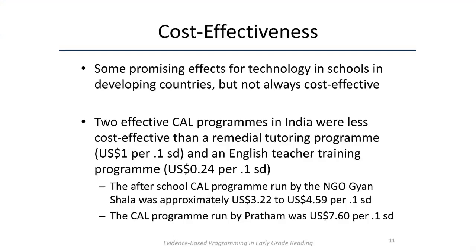For example, remember the Gujarat program — the one that generated negative results when replacing school time but positive results as an add-on. That add-on program generated positive results at a cost of about three to four dollars for a given increase in education outcomes, relative to a remedial tutoring program tested in Baroda that got you the same improvement in learning outcomes at a fraction of the price. Similarly, an English teacher training program also generated comparable improvements in learning outcomes at a fraction of the price of the computer-assisted program.